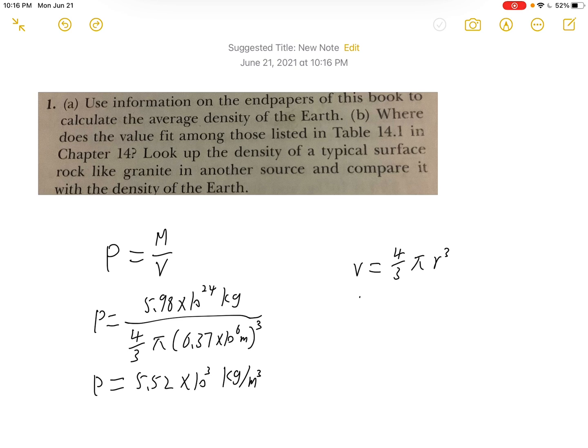So for part B, we can get the density of granite from the internet, which would be approximately 2.69 times 10 to the 3rd power kilogram per cubic meter.